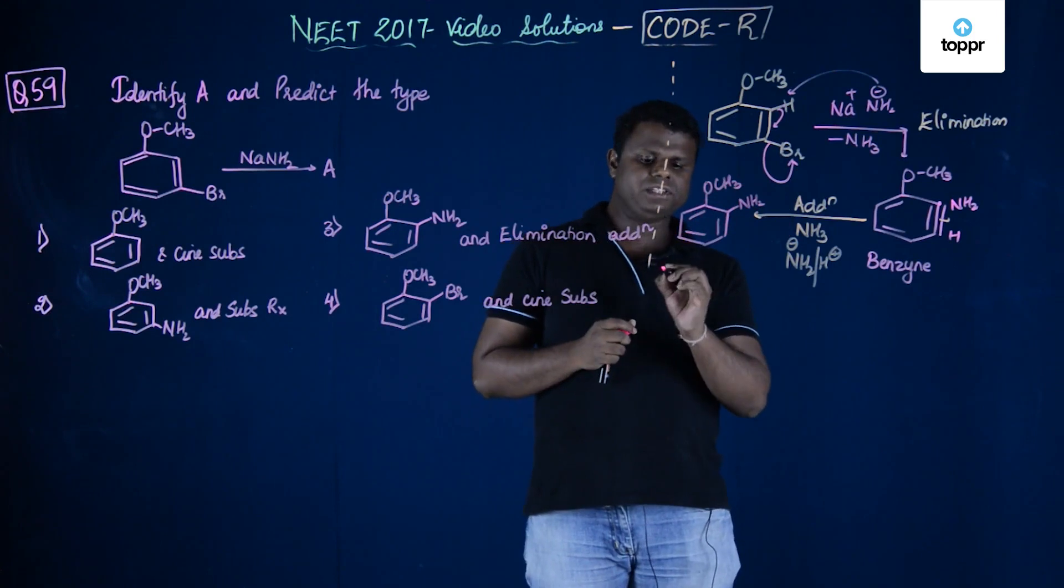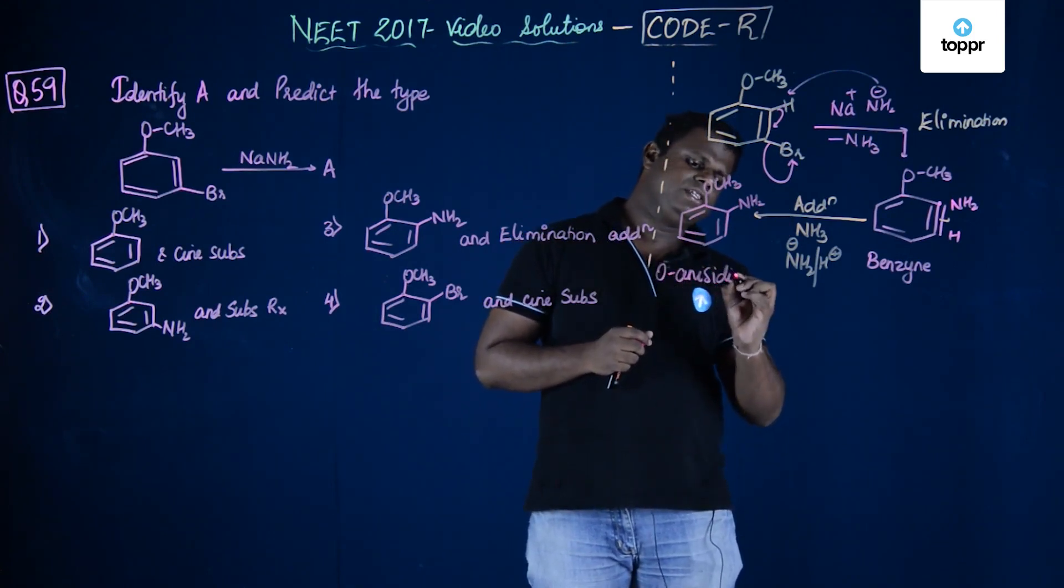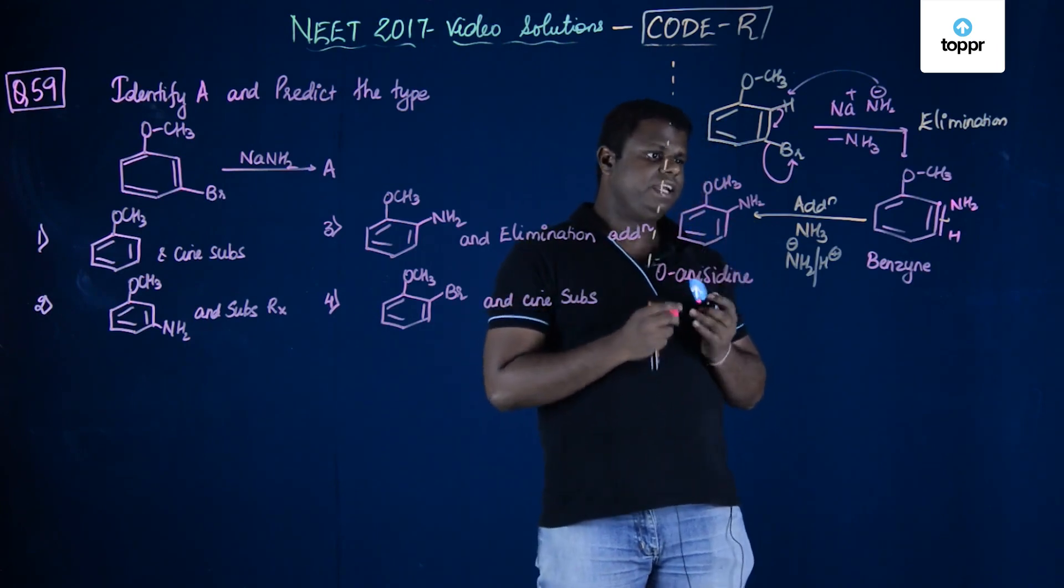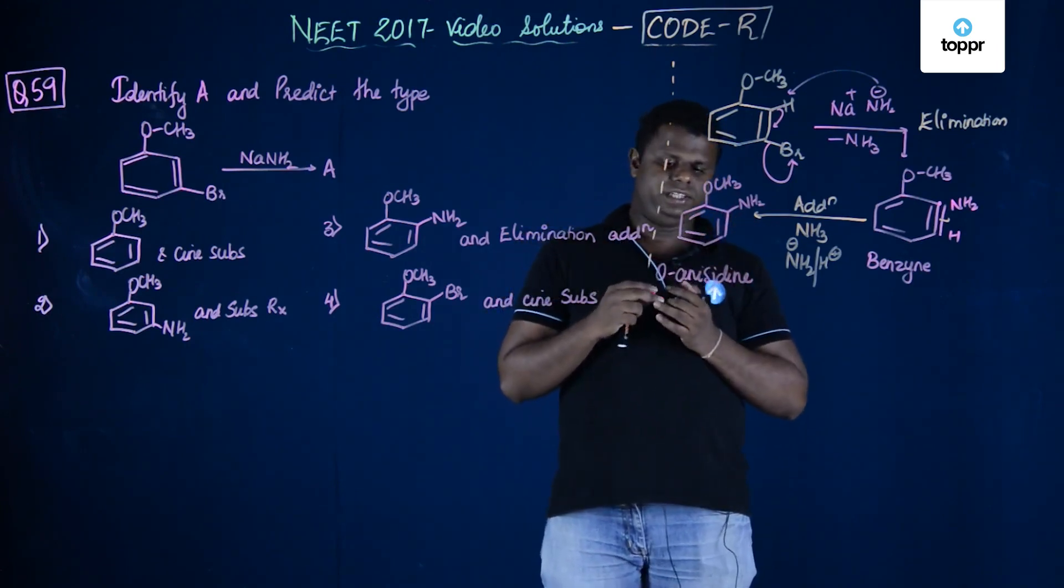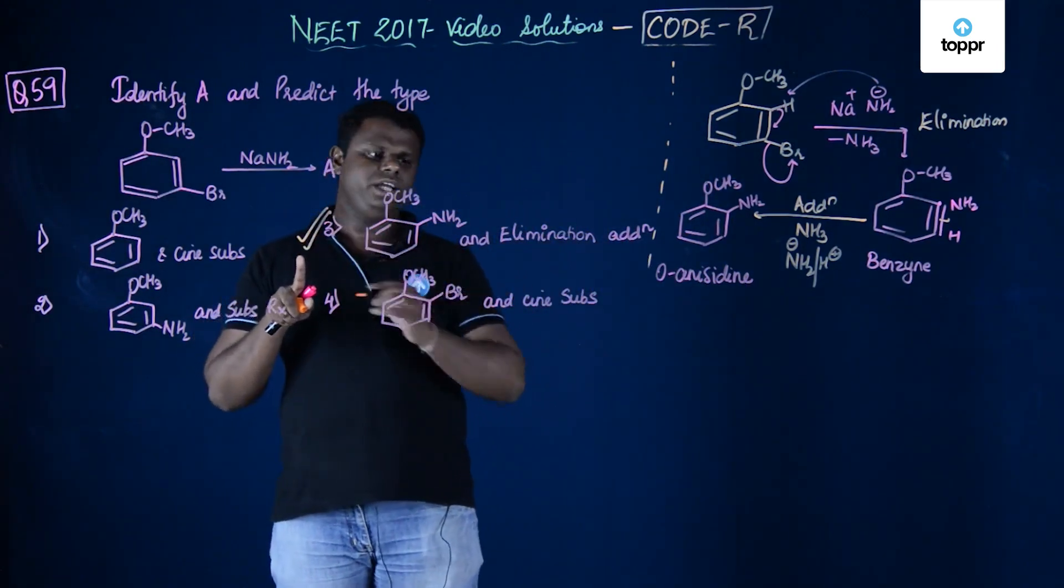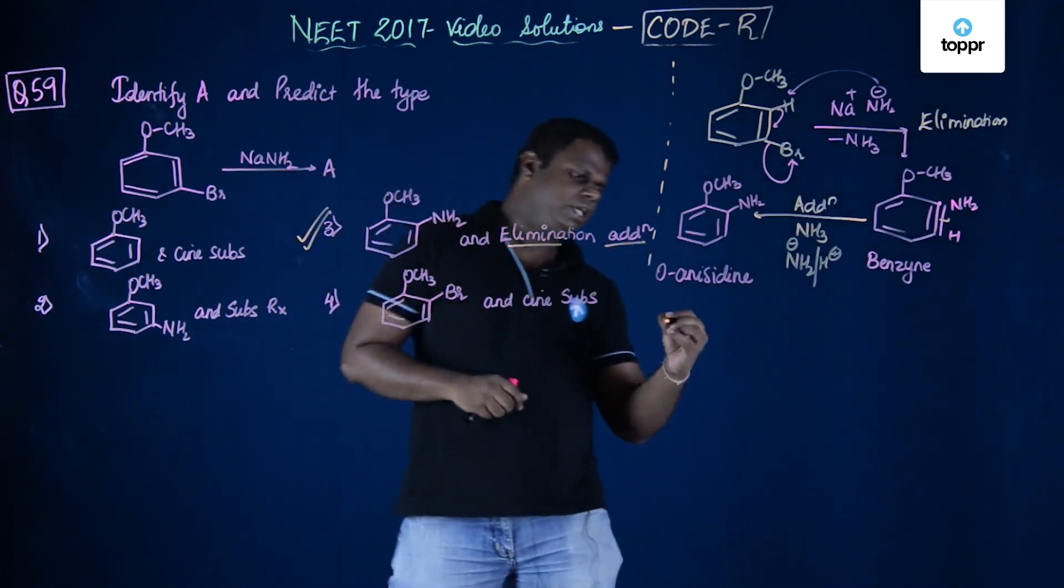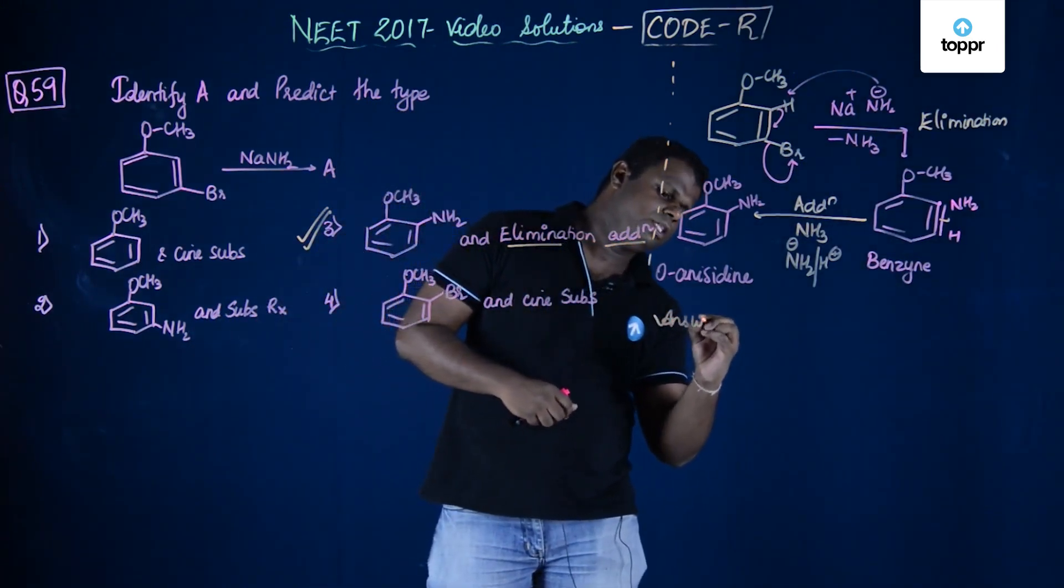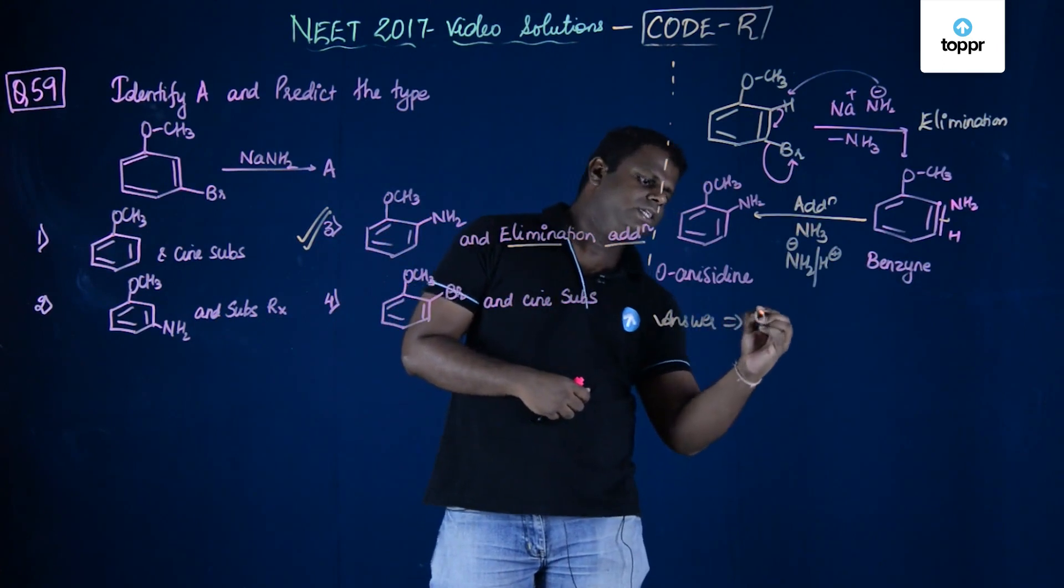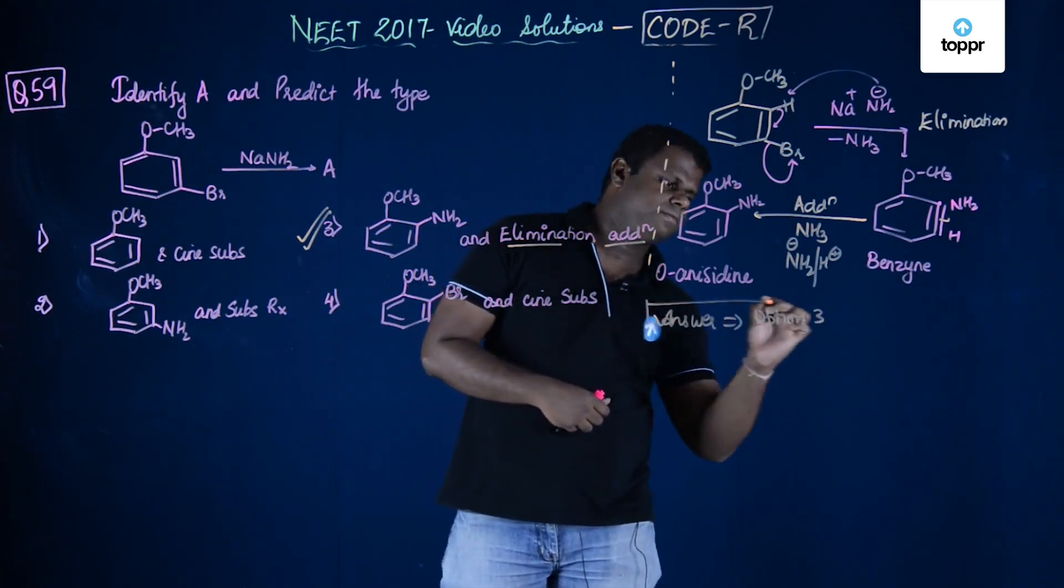Anisole becomes - the name of this compound is orthoanisidine. If it is CH3 then you say tolidine. Anisole becomes anisidine in this case. The correct answer to this particular question is option number 3 which says it is elimination-addition reaction. The correct answer to this particular question is option number 3.